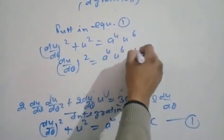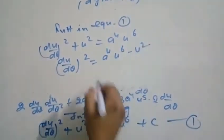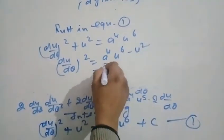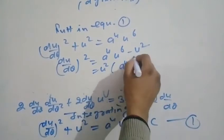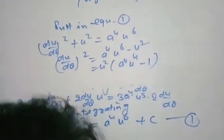Rearranging: (du/dθ)² = a⁴u⁶ - u² = u²(a⁴u⁴ - 1).